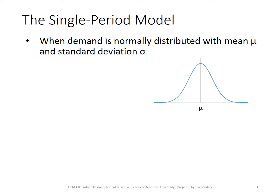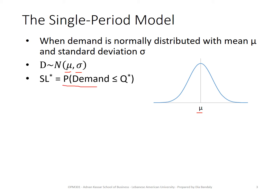Starting with the case when demand has a normal distribution. When any variable has a normal distribution, we have two parameters: the mean and the standard deviation. Here I'm showing a normal curve where the mean is equal to mu. The service level we find — equal to CS over CS plus CE — equals the probability that demand is less than or equal to Q star.